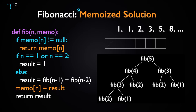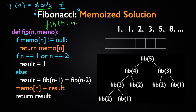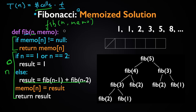Let's think about the time complexity for this memoized solution, which we'll call T(n). We find it by multiplying the number of times we call fib by the time it takes to execute each call. There are only two ways fib is called: the initial call with n and memo, and from the recursive line. Notice that the block after the first if-clause is executed at most n times, because there are n possible arguments — 1 through n — and each time fib is called with a given argument, the return value is stored in memo at index n.